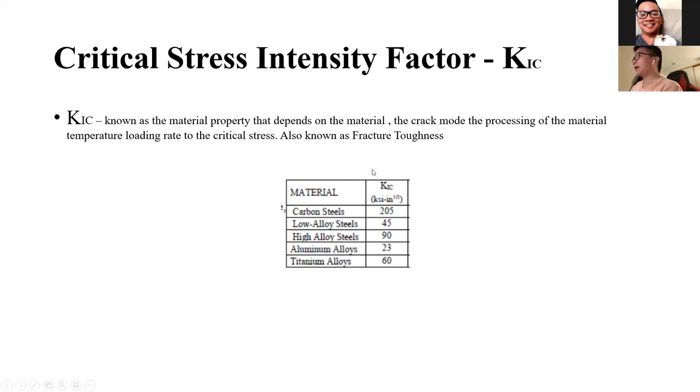When we find the value of the stress intensity factor K_I, we can compare it to K_IC, the critical stress intensity factor. K_IC is a material property dependent on the material, crack mode, processing, temperature, and loading rate. It's also known as fracture toughness. Since it's a material property, we can find its value for engineering materials. Here are some materials and their K_IC values. For example, carbon steel has a critical stress intensity factor of 205 MPa times square root meter.